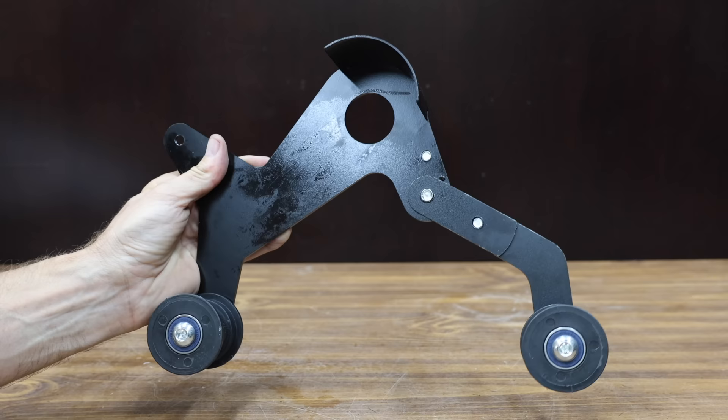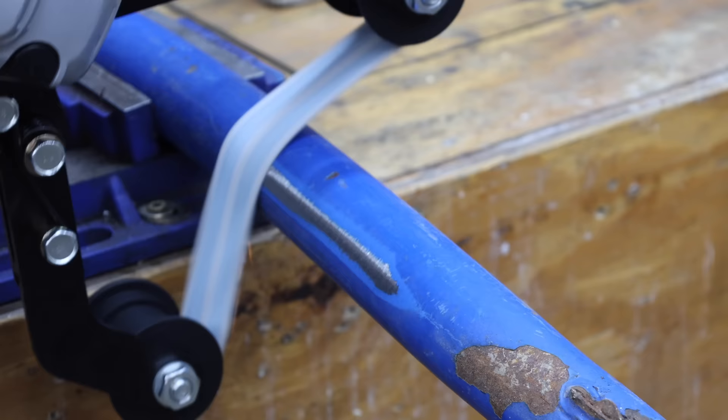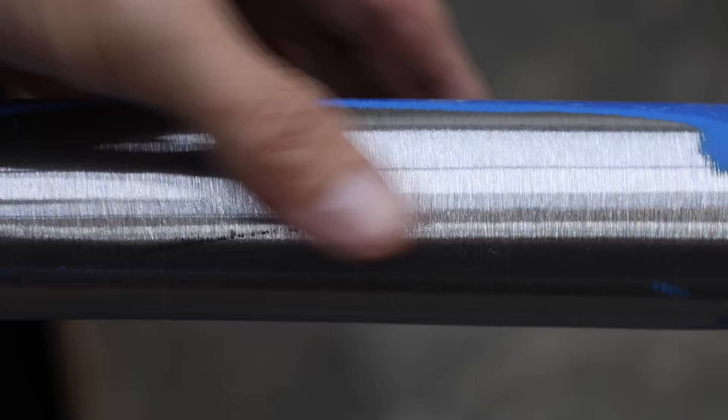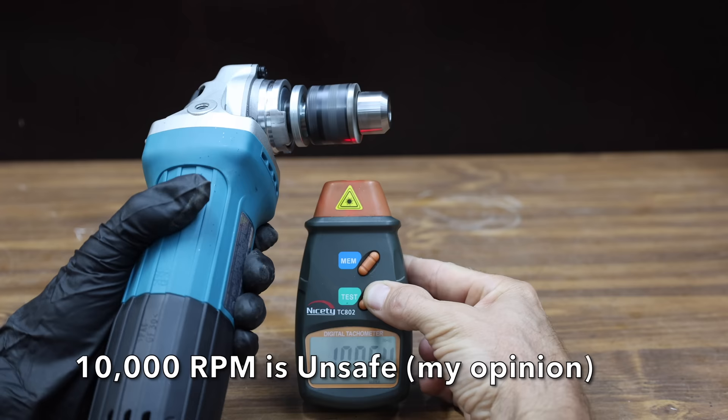While most of the angle grinder attachments were sketchy, there are actually some good attachments like this belt sander. It has a unique design that allows it to sand curved objects like pipes. While there are some good angle grinder attachments, I highly recommend avoiding the dangerous ones like this drill adapter.